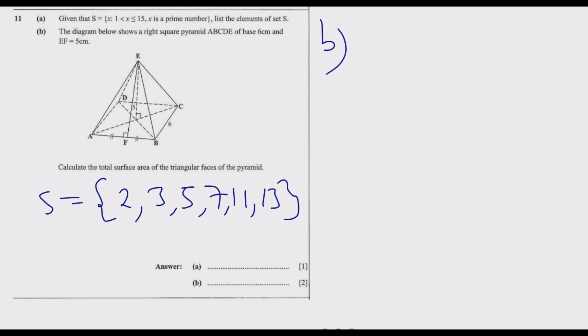Let us go to part b of question 11. The diagram shows a right square pyramid ABCDE with base 6 centimeters and EF 5 centimeters. Calculate the total surface area of the triangular surfaces of the pyramid. In this case, we are taking away the base area.